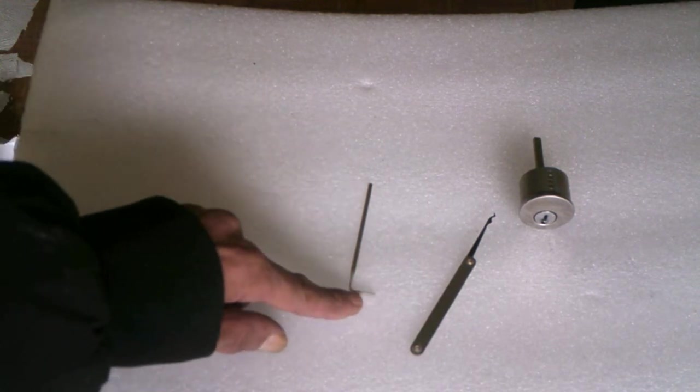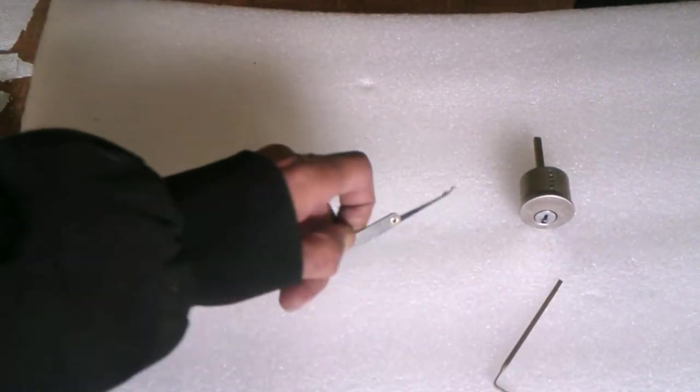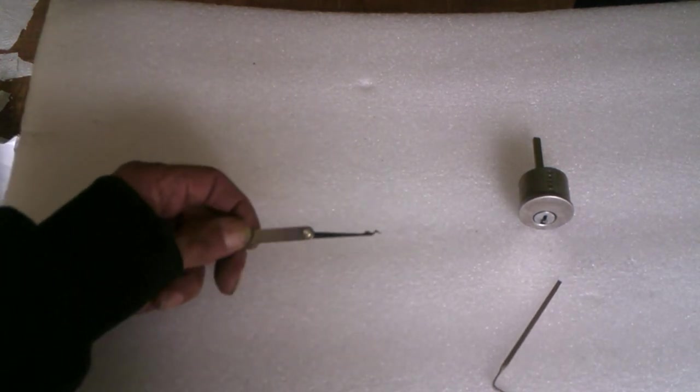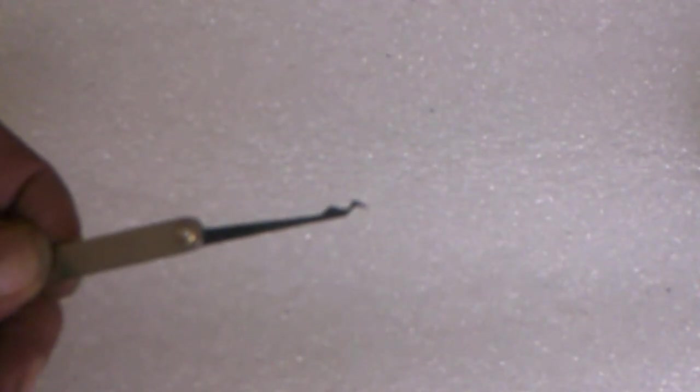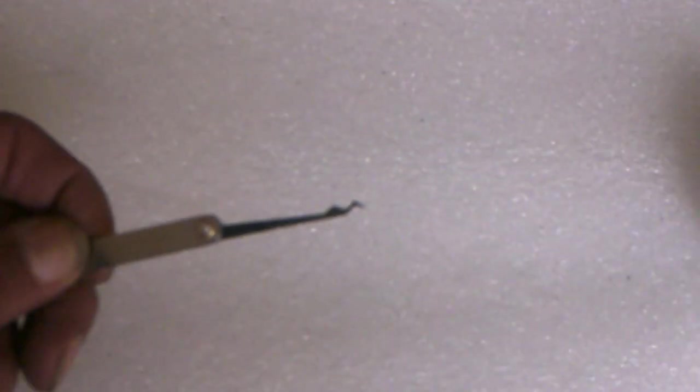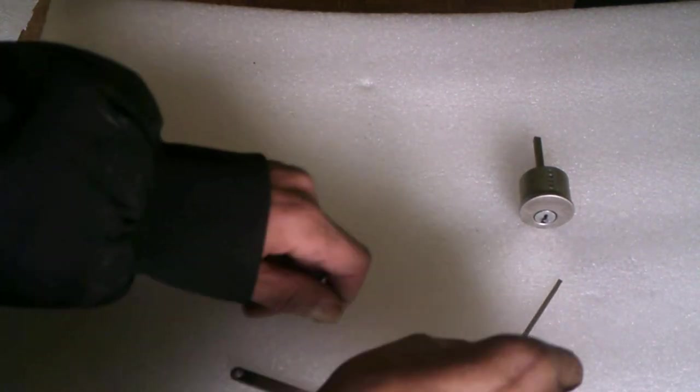We're going to use a standard L tension wrench, and that's made out of stainless steel. Cost about two bucks. And this is my favorite pick. That right there can get me in a whole lot of different kinds of locks. And that's what we're going to use today to pick this lock.